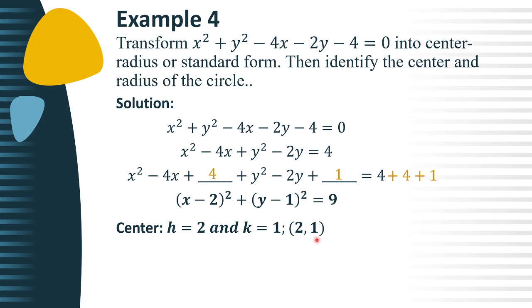Then, for the radius, we have r square equals positive 9. So, extracting the square root, the radius of the circle is equal to positive 3. Okay? So, this will be our final answer.